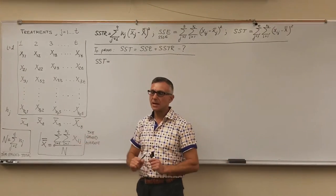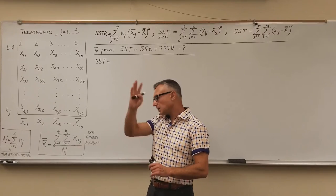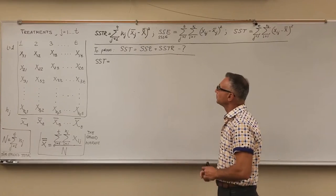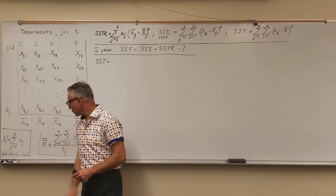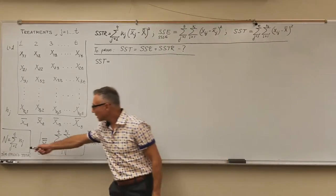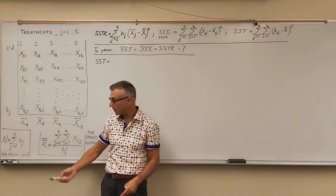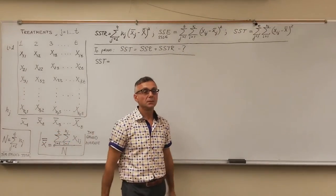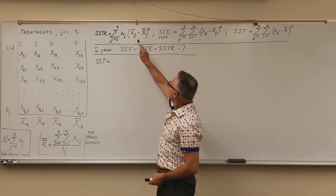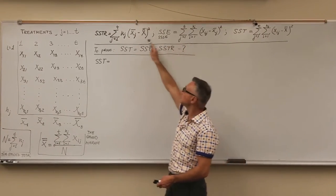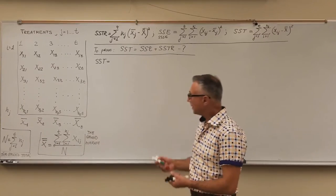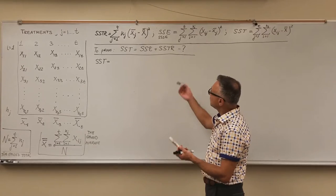We use double summation — a double looping process by columns and rows. The grand total is just the sum of all the sizes of all treatments: one summation of N_J, where J runs from 1 to T — the total grand number of elements. So those are the three variances. Let me use different colors to show them on the board and visualize them.